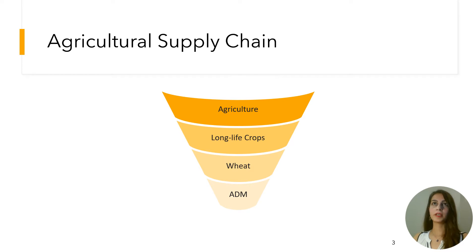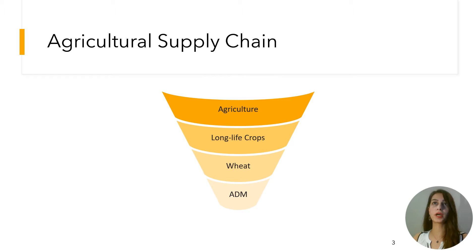Although many types of supply chains experience these disruptions — including healthcare, clothing, and agricultural supply chains — the focus of this presentation is mitigating supply-side disruptions in agricultural supply chains. Specifically, I'll use ADM company as a case study, as it is one of the most prominent global agricultural processing companies. Within the ADM supply chain, I'll focus on long-life products like wheat.